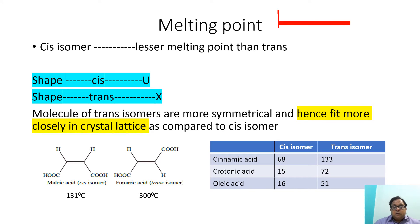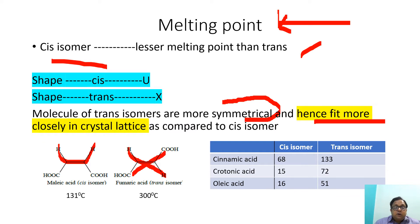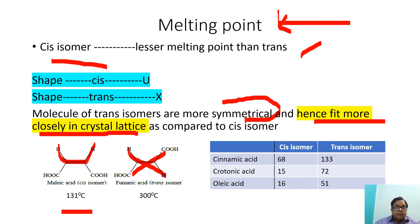The next physical parameter used for configuration of geometrical isomers is melting point. It is generally observed that cis isomers have a lower melting point than trans isomers. If we look at the arrangement of atoms in a cis isomer, they follow the pattern of the English letter U. Trans isomers follow the pattern of the English letter X. This pattern makes trans isomers more symmetrical, fitting more closely in the crystal lattice, and this closer packing results in a higher melting point. For example, maleic acid, being the cis isomer, has a melting point of 131°C.